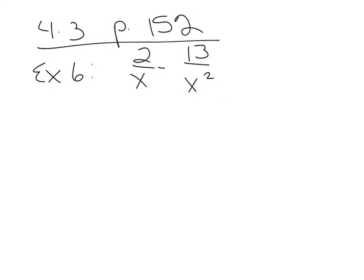We're still working on intermediate algebra, section 4.3. This is the second video, so we're starting with example 6 on page 152. We're going to add and subtract rational expressions that have different denominators.